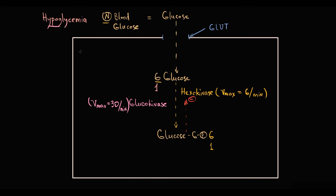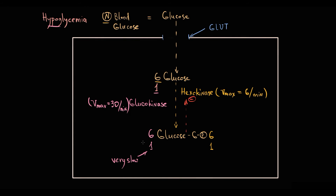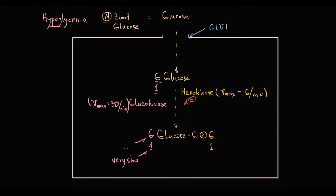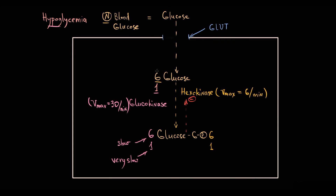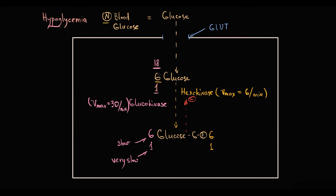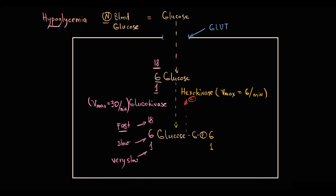In hypoglycemia, when only one glucose molecule enters the cell, glucokinase will be very, very slow. Even if 6 glucose molecules enter the tissue, glucokinase's speed will increase somewhat but will still be slower than hexokinase. However, the more glucose molecules that enter the cell, the higher the speed of glucokinase becomes — and as mentioned, this enzyme can be very, very fast.